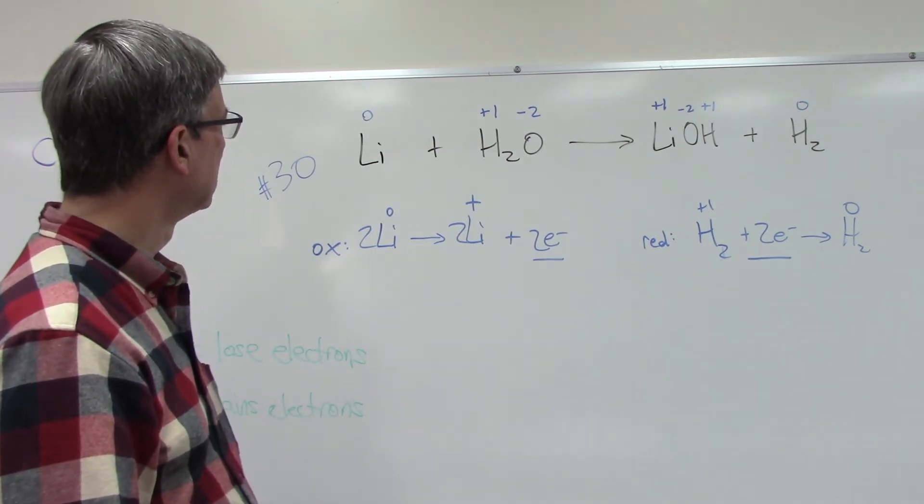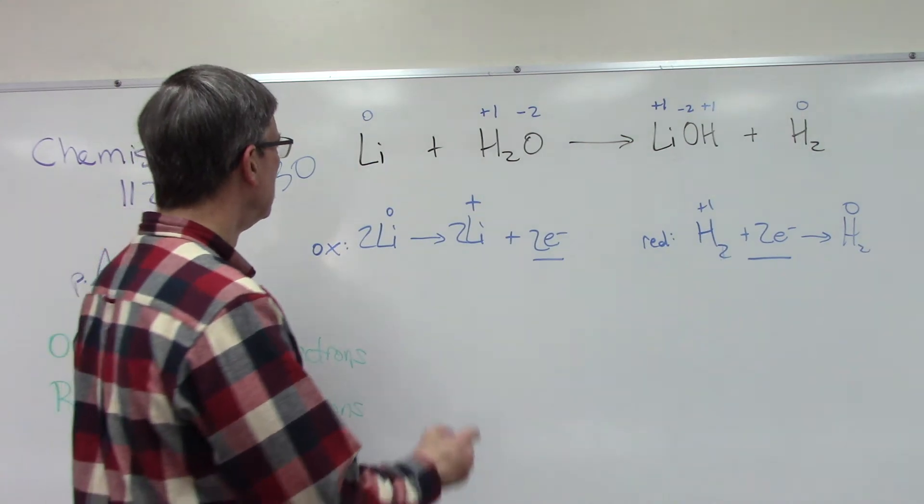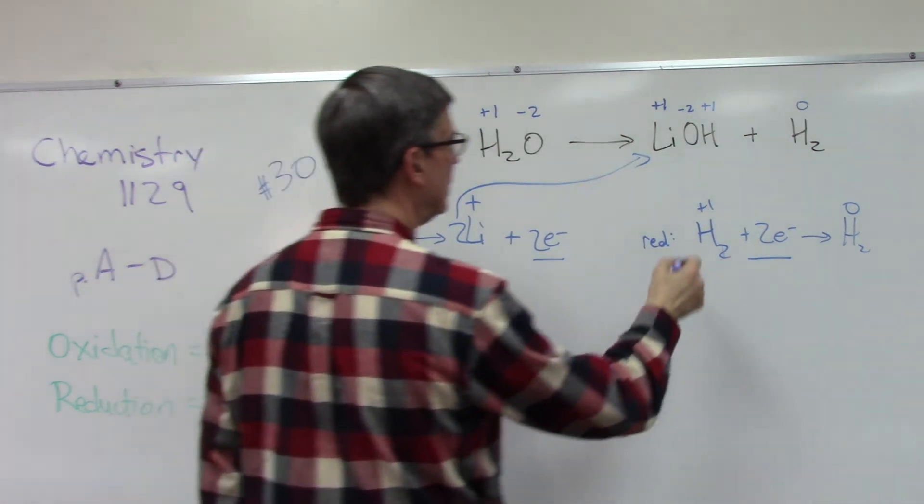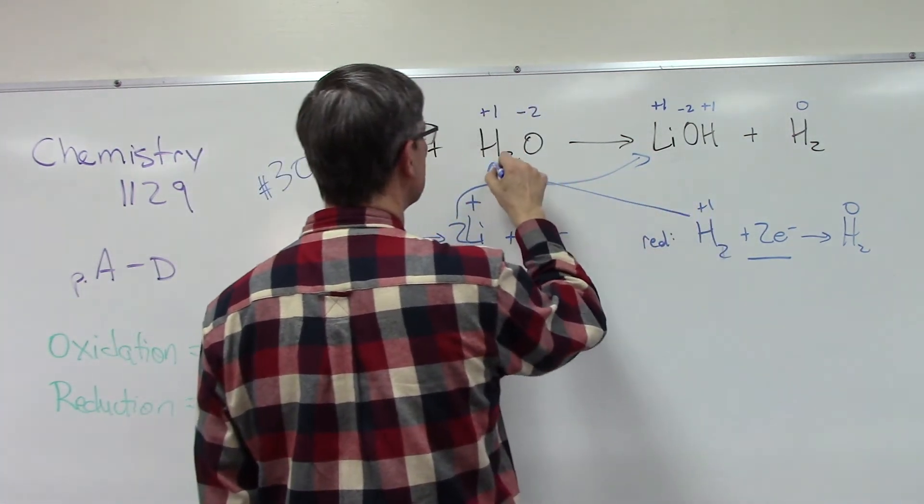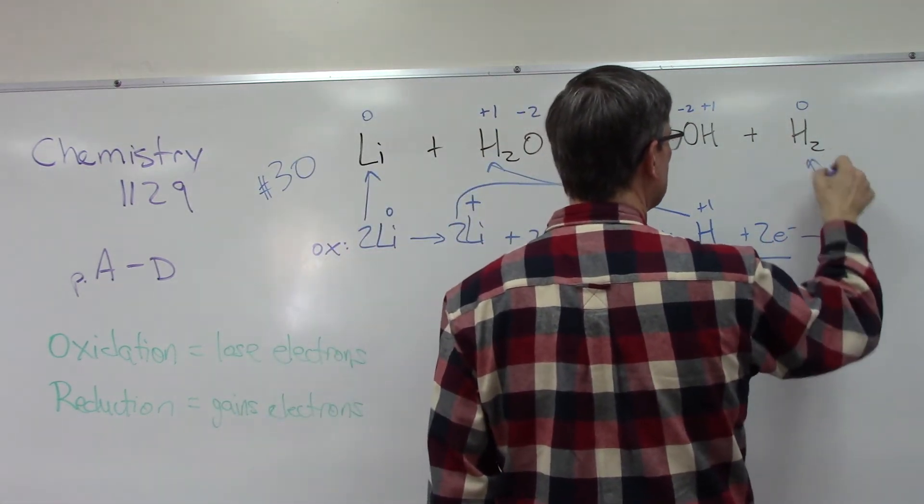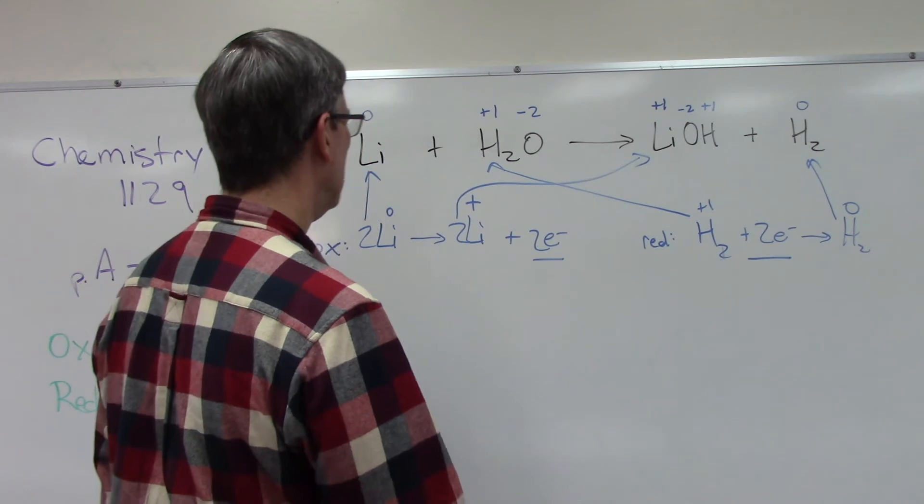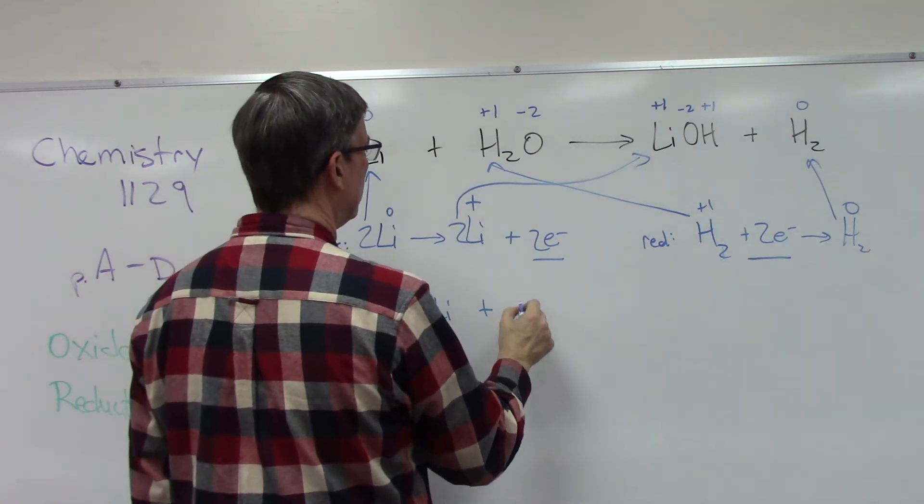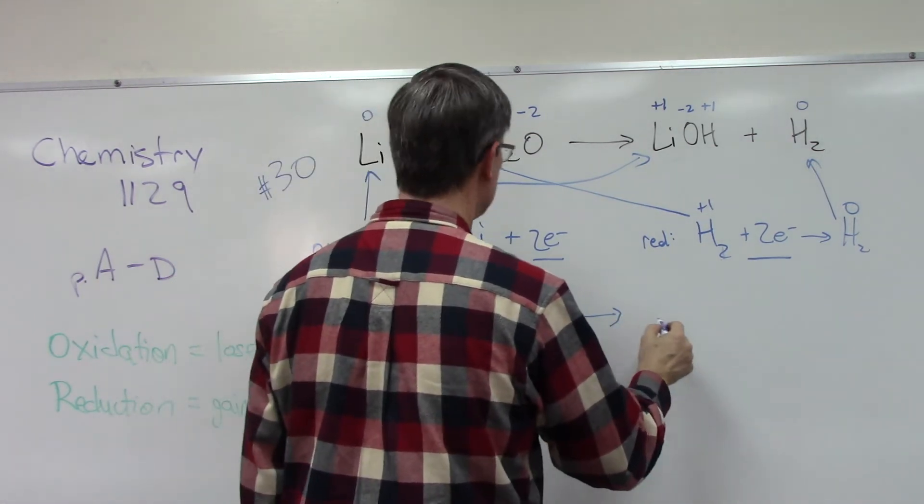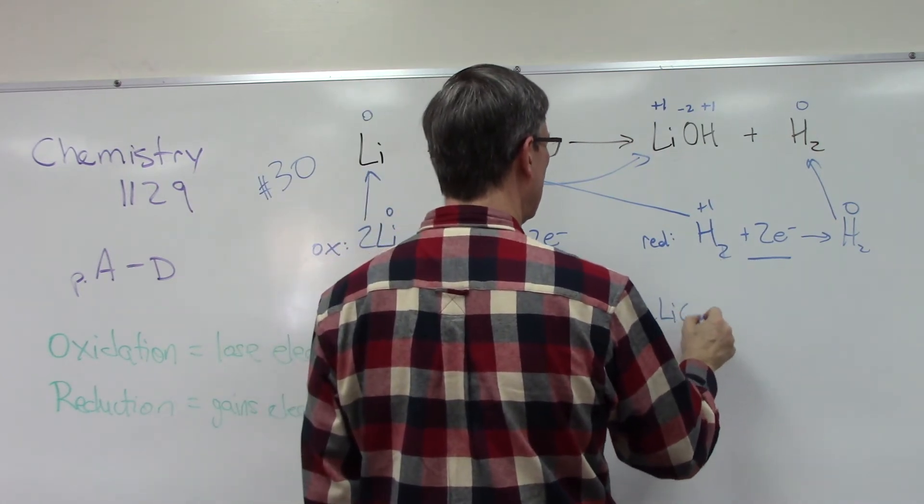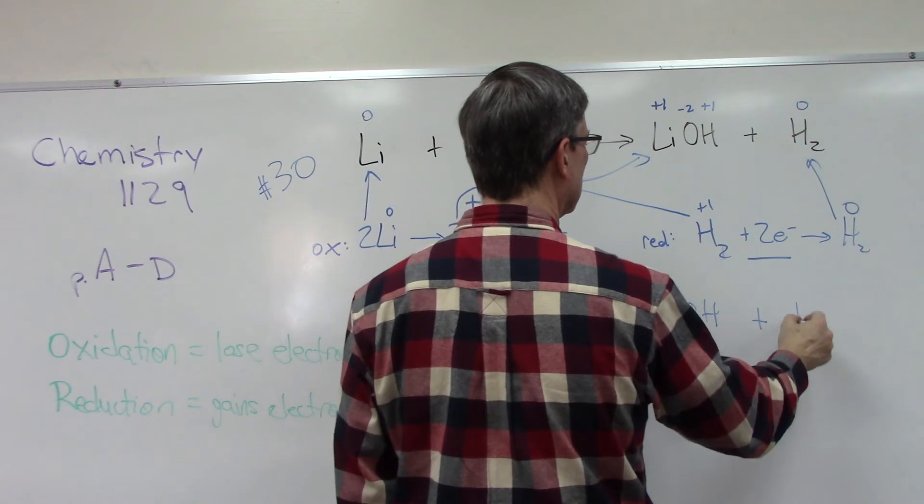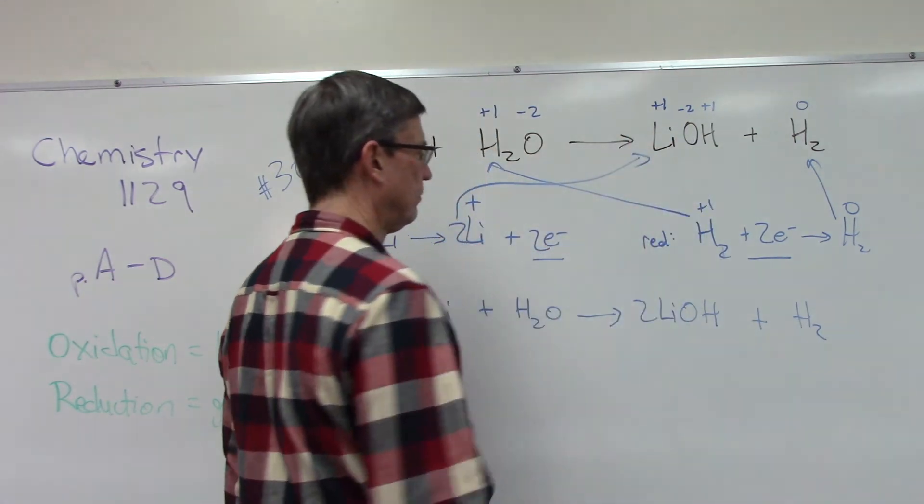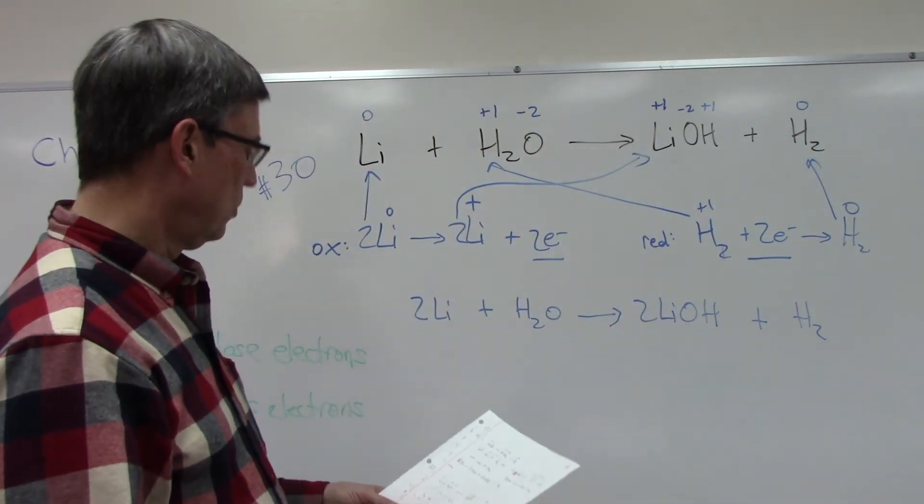So let's map these to the elements, and this H2 is this one and this is this. So it looks like the coefficients we're changing are 2Li plus H2O yields 2LiOH plus H2. We did not have to change the coefficients on these two. So far so good.